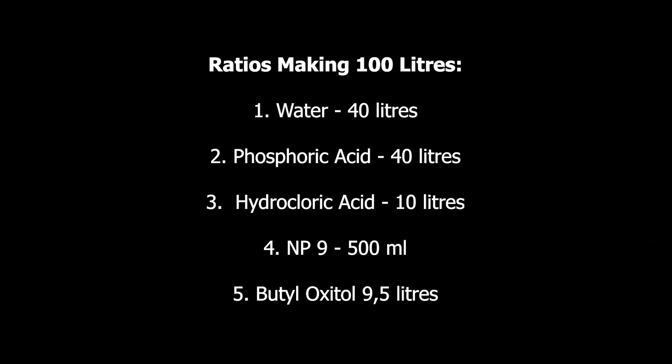Water should be 40% of the total volume — out of the 100 liters that we're manufacturing, we're going to need 40 liters of water. Phosphoric acid should also be 40% of the total volume — out of the 100 liters, we're going to need 40 liters of phosphoric acid. Hydrochloric acid should be 10% of the total volume — out of our 100 liters, we need 10 liters of hydrochloric acid.